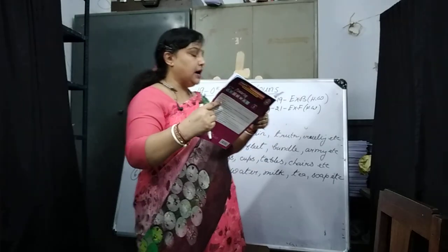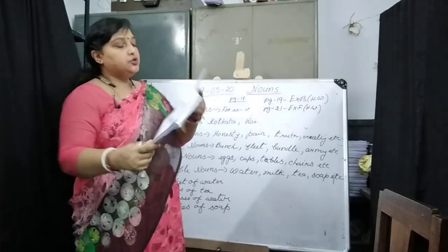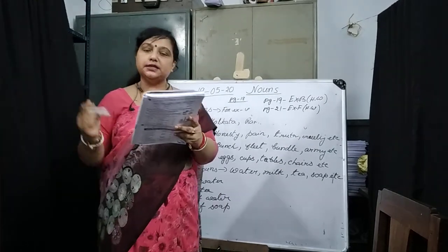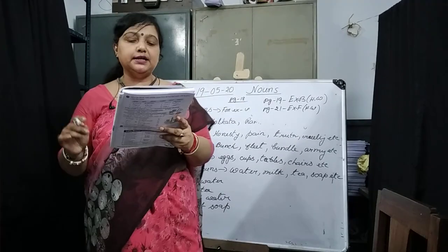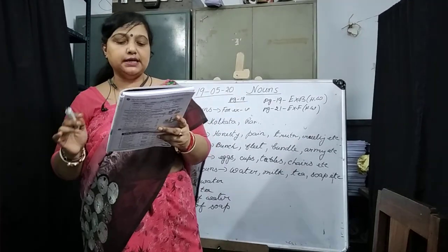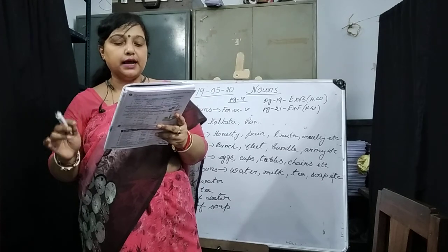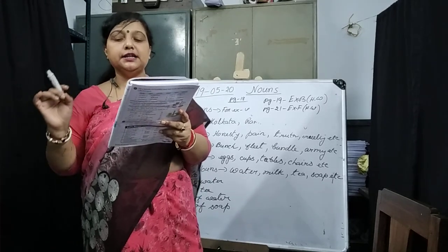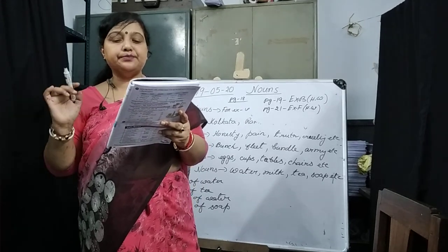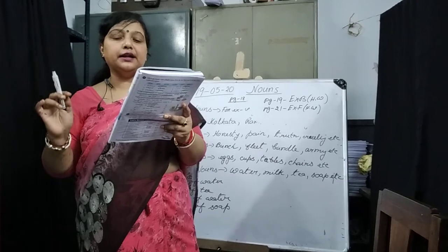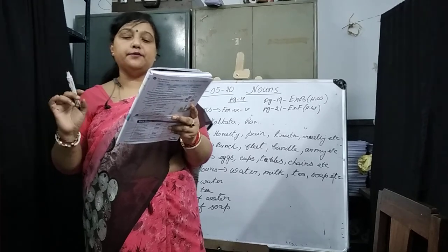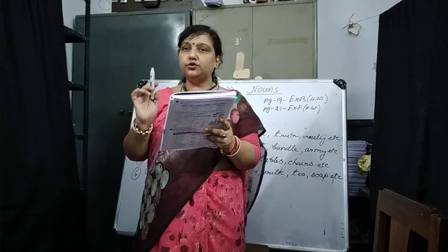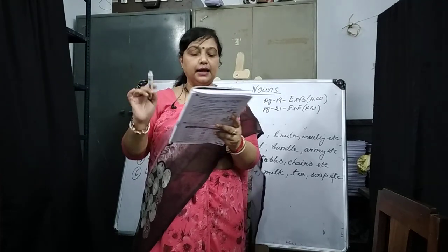Collective nouns — you have to learn all of these: a flock of sheep, a string of pearls, a brood of chicks, a tuft of grass, a swarm of bees, a constellation of stars, a bunch of flowers, a crew of sailors, a bundle of sticks, a team of players. Learn all of these by heart.